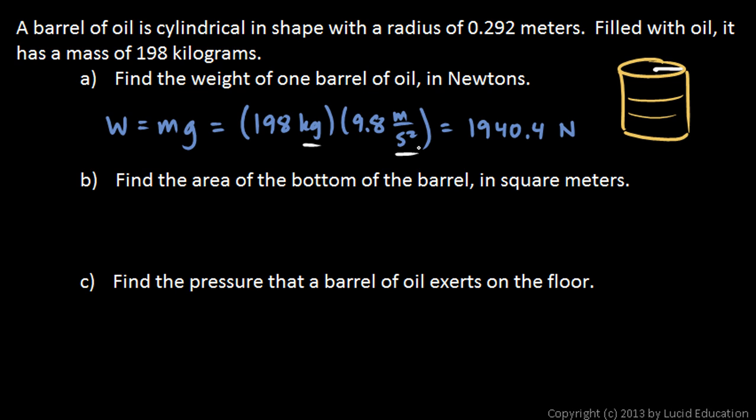Part (b): Find the area of the bottom of the barrel. If you imagine this circle, that's the area we need. The formula for the area of a circle is pi times the radius squared. Pi is 3.14, so it's 3.14 times 0.292 squared—the 0.292 is squared, not the pi—and that works out to 0.268 square meters.